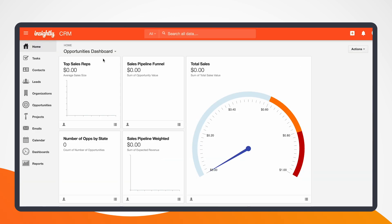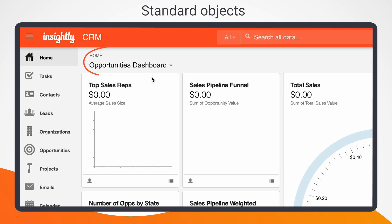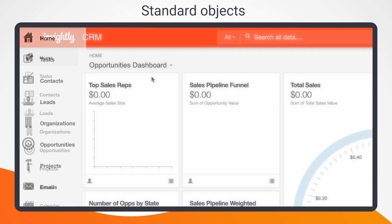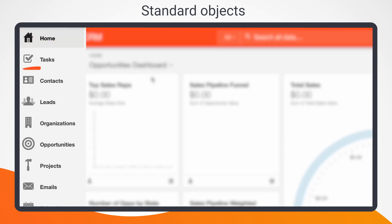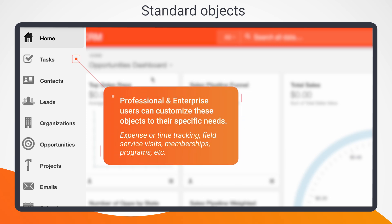Invite key players based on how involved they might be with your use case. Once you've finished initial app setup and invited your team, you'll land on Insightly's standard opportunities dashboard. Notice the tabs on the left: Tasks, Contacts, Leads, etc. These objects contain various Insightly features for you to explore.